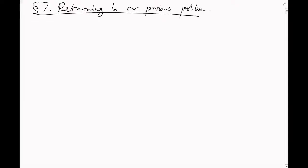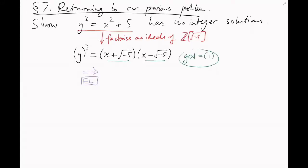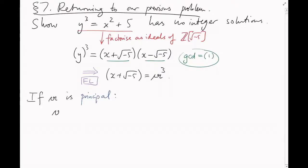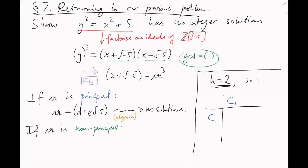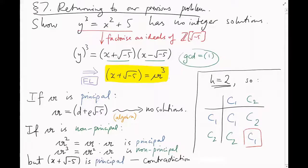Section 7: Returning to our previous problem. Last video we tried to show that the equation y³ = x² + 5 had no integer solutions. We factorized this equation into a product of ideals of Z[√(−5)] and applied the ideal version of the fundamental lemma, which told us that the ideal (x + √(−5)) was the cube of some ideal A. We noticed that if A is principal, we can treat it like an element, and after a little bit of algebra, we can see there are no solutions in this case. But what if A is non-principal? We now have our ideal multiplication table for Z[√(−5)]: if A is non-principal, then A² is principal and so A³ is non-principal again. But A³ is generated by the single element x + √(−5) and is therefore principal. So this case can't happen either, meaning there are no solutions at all.